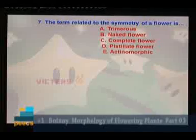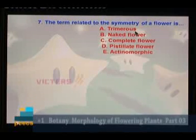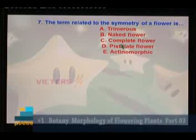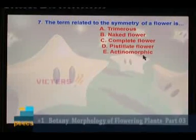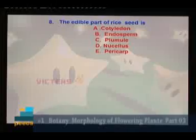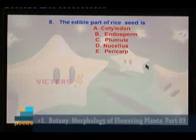Question 7: The term related to the symmetry of a flower is — A: trimerous, B: naked flower, C: complete flower, D: pistillate flower, E: actinomorphic. Trimerous refers to number of petals; naked and complete refer to presence of parts; pistillate refers to reproductive parts; actinomorphic is the term related to symmetry. Answer: Option E, actinomorphic — any vertical section passing through the center divides the flower into two equal halves. Question 8: The edible part of rice is — A: cotyledon, B: endosperm, C: plumule, D: nucellus, E: pericarp. Rice is a monocot endospermic seed — the food storing part is the endosperm. Answer: Option B, endosperm.